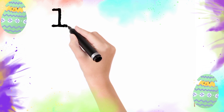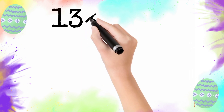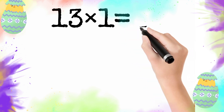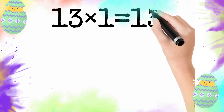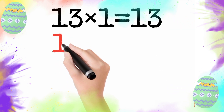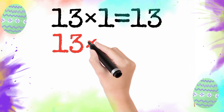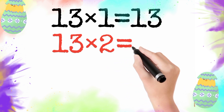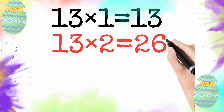13 multiply by 1 is equal to 13. So 13 times 1 is 13. 13 multiply by 2 is equal to 26. So 13 times 2 is 26.